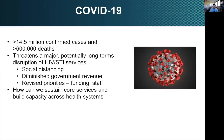Finally, the elephant in the room is COVID-19. At this point, over 14.5 million confirmed cases around the world and over 600,000 deaths — astounding for an infectious disease we didn't even identify until recently. COVID-19 threatens major, potentially long-term disruption to HIV and STD services: social distancing measures, diminished government revenue as the economy suffers, and revised funding and staffing priorities focused on COVID-19 to the detriment of HIV and STD programs. The question is how we can sustain our core services and build capacity across healthcare systems.